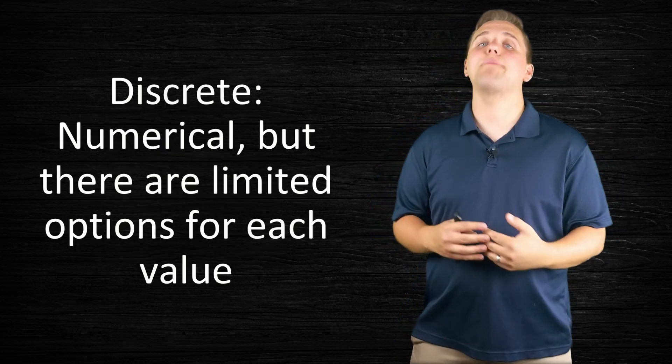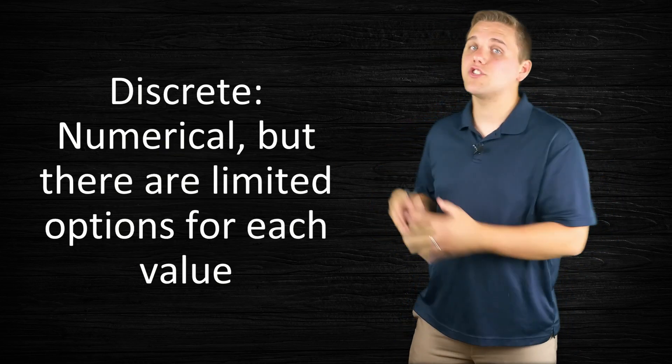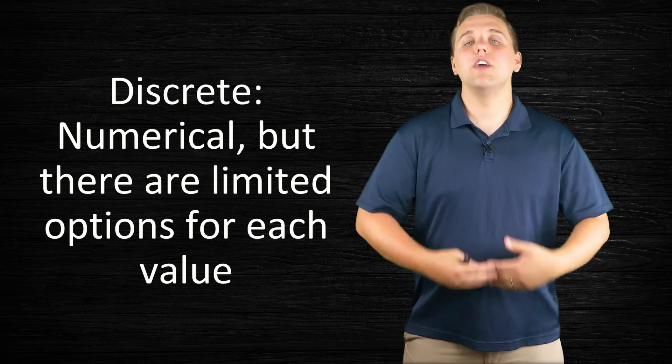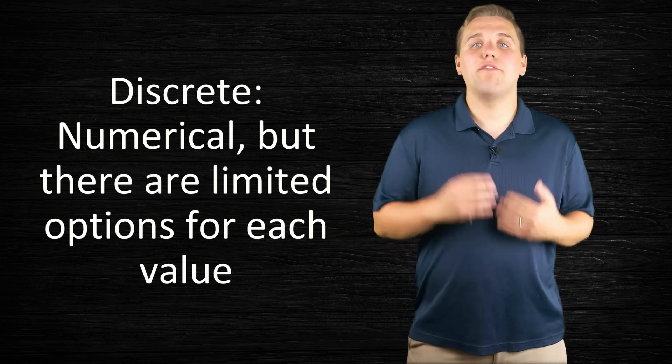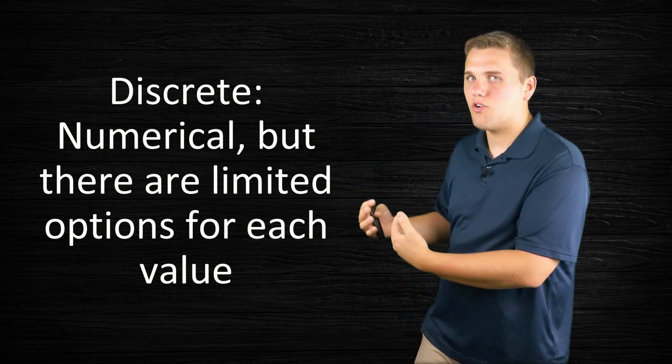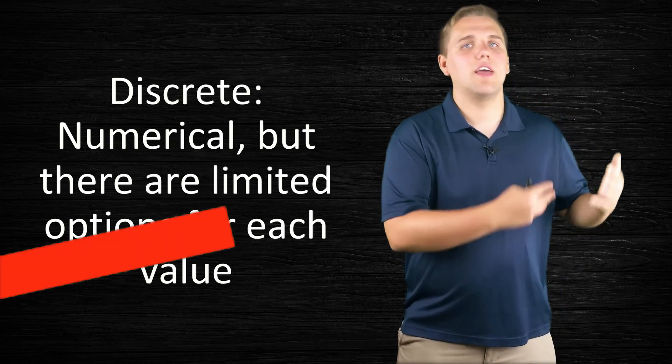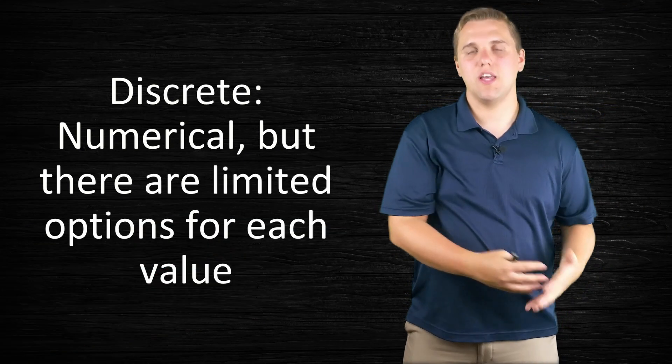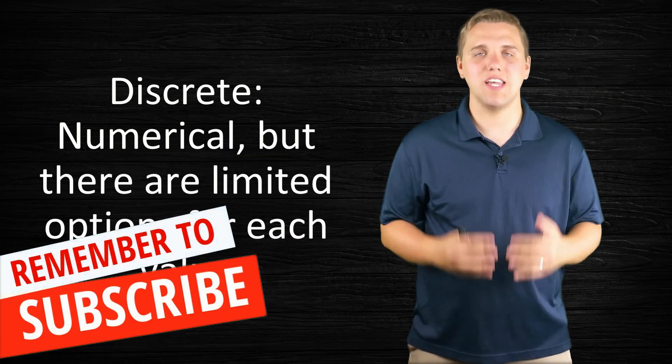Now there are actually two types of numerical variables. The first type is called discrete. Discrete variables are numerical but are limited in terms of the number of options you can have in response to that observation.